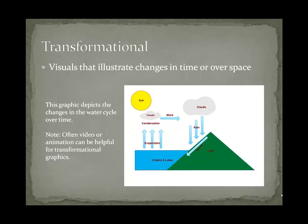Transformational graphics are used to show changes in time over space. You can see this example that shows the water cycle and how it changes over time and space. Animations or video clips are often very effective transformational graphics.